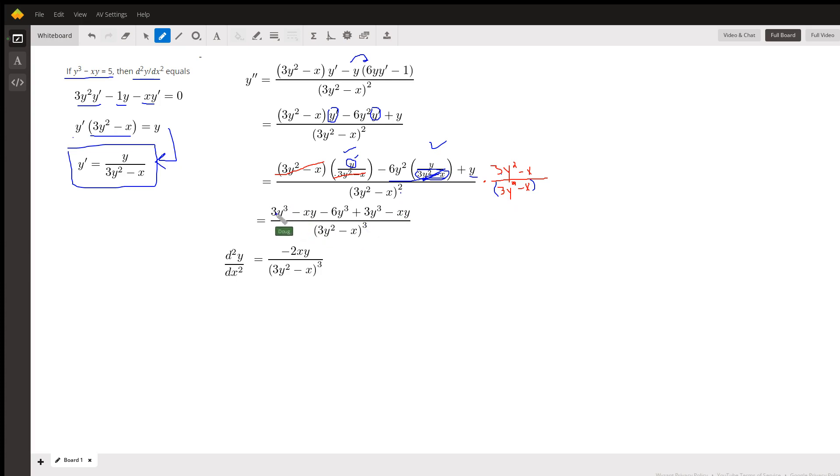If I combine similar terms, those y cubes combined to 0, minus 2xy over that 3y squared minus x, the quantity cubed. So there's your second derivative. Right there.